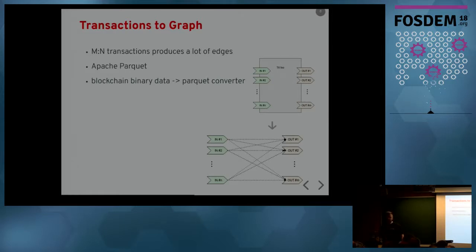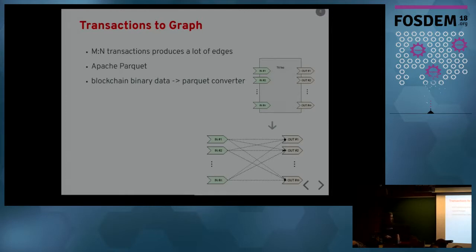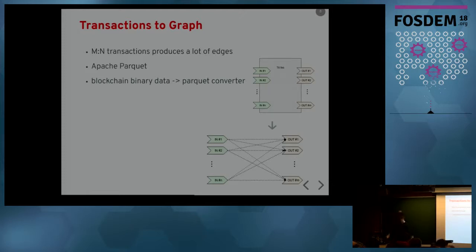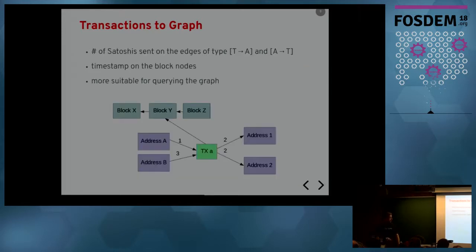I use Apache Parquet as a format because it's suitable for Spark. Spark can open Parquet files, it supports partitioning so I can put different pieces of data on different nodes, it has a schema, and it's columnar — suitable for distributed processing. I also developed an application called the Parquet converter based on another open source project. It takes the binary files from the official Bitcoin client — which downloads about 280 gigabytes — and creates this Parquet representation.